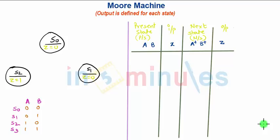As you see here there are three states S0, S1 and S2 for which output Z is defined in each state. For S0 output is 0, S1 state output is again 0 and for S2 output is 1.